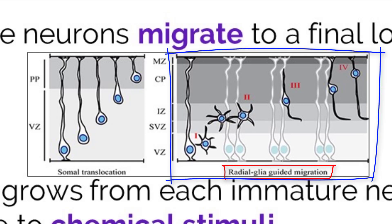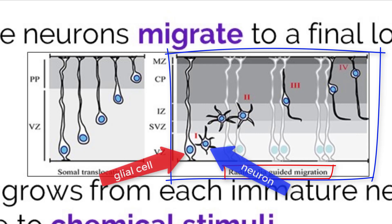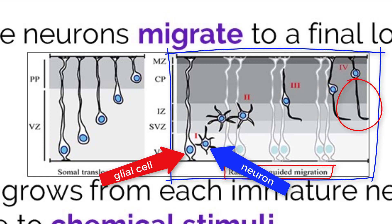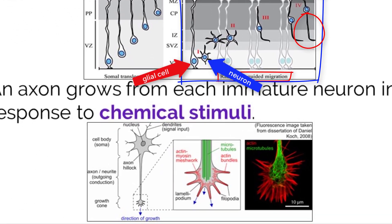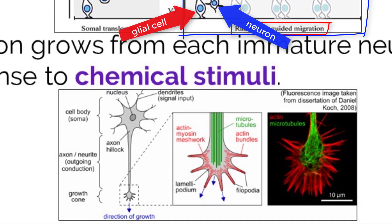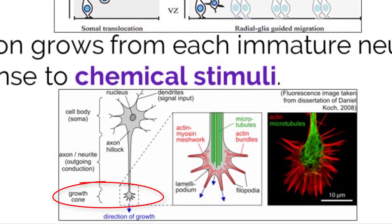This image depicts an immature neuron using the scaffolding of the glial support cells to move its way up. When the cell has found its position, the axon also grows to make a connection to the dendrite of another neuron. A structure called an axon growth cone is guided by chemical signals, telling the axon which way it needs to grow to navigate to its connection point.